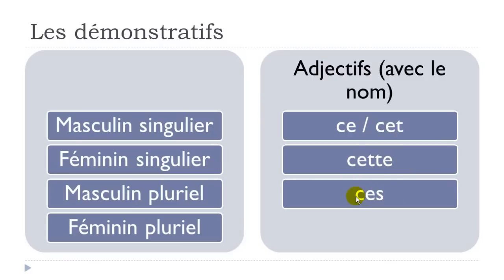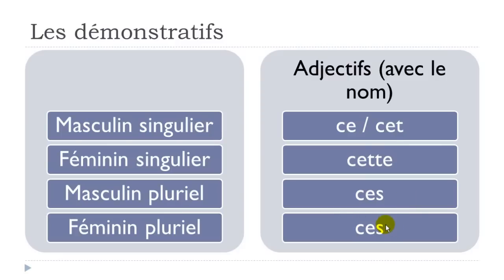For the plural form, both masculine plural and feminine plural are 'ces.' So we have one form 'ce,' the option 'cet' when you get a noun starting with a vowel, then 'cette' for the feminine form, and for the plural you get only one form: 'ces.' Remember: 'ce,' 'cet,' 'cette,' 'ces.'